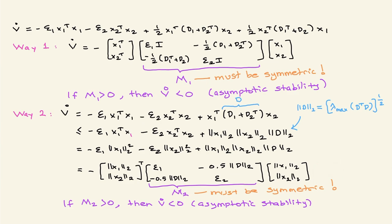Again, M2 equals M2-transpose, which is important in order to claim V-dot less than or equal to zero. The sufficient condition for Way 2 is: if matrix M2 is positive definite — meaning its two eigenvalues are both positive — then V-dot is less than zero, giving asymptotic stability. Note that from one step to the next we take an upper bound; this will be important when making the key comparison later.